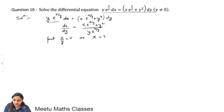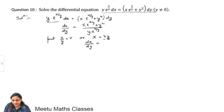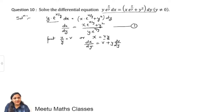With x = vy, differentiate with respect to y using the product rule: dx/dy = v + y · dv/dy. Substitute this into the rearranged differential equation, replacing x with vy and e^(x/y) with e^v.